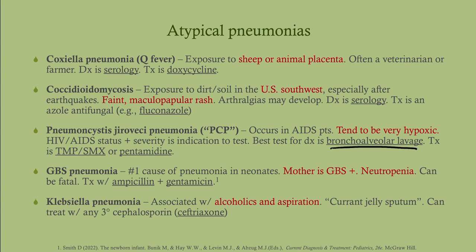Group B Strep pneumonia occurs in neonates. Look for a history of a mother with GBS infection or who was not tested, and vaginal delivery. These babies will have neutropenia and can also present with hypothermia instead of fever. Treatment is ampicillin and gentamicin.